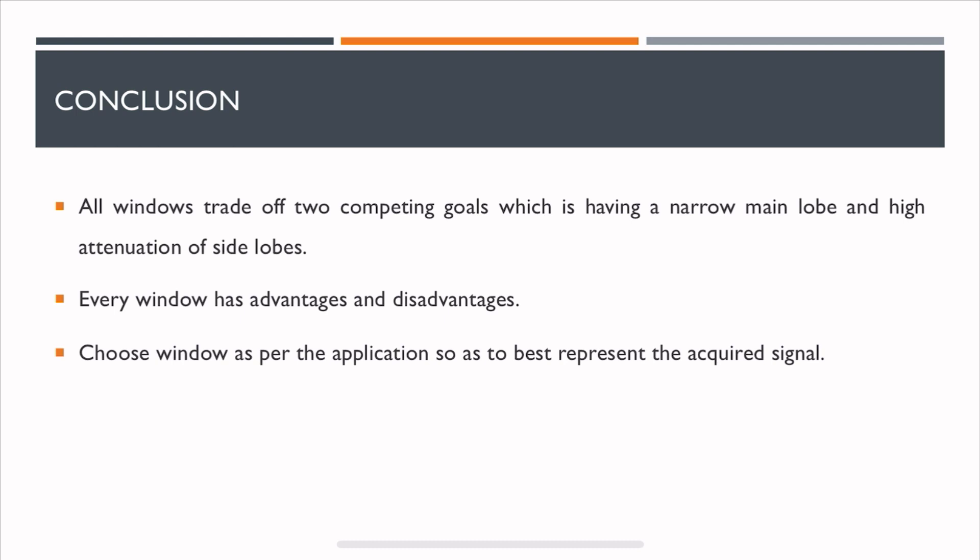To conclude, all windows trade off two competing goals, which is having a narrow main lobe and high attenuation of the side lobes. Every window has advantages and disadvantages. Choose a window as per the application so as to best represent the acquired signal. Alright, thank you for watching this video. I hope you enjoyed it. Have a great day.